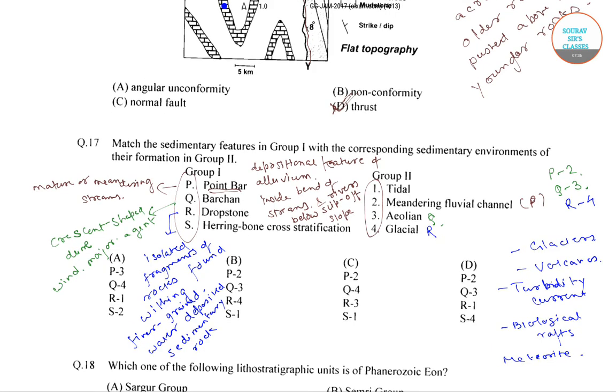What is remaining is herringbone cross stratification, and corresponding to it would be tidal, that is S-1, which is our option B. The correct answer to this question is option B.